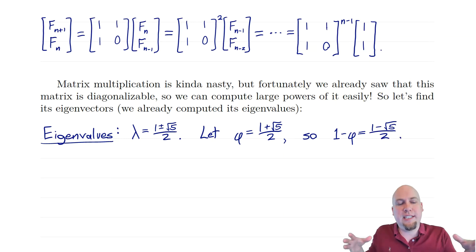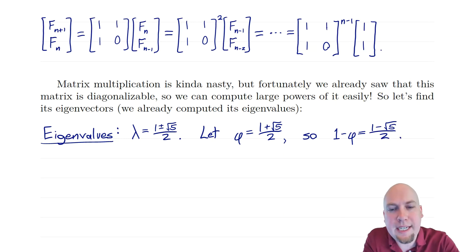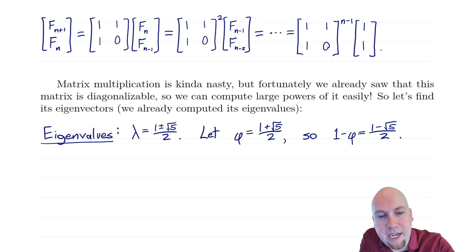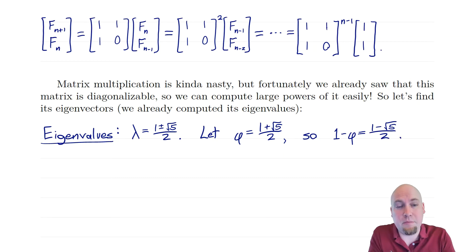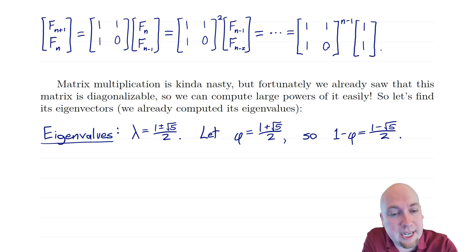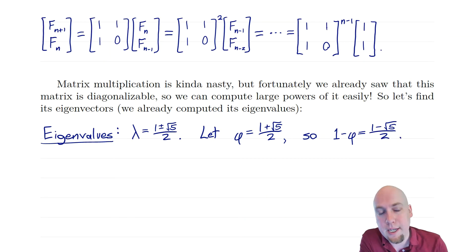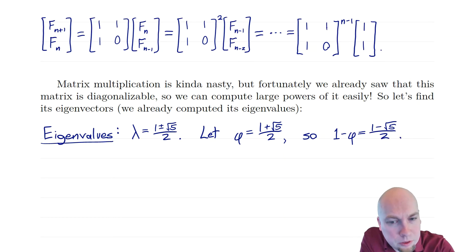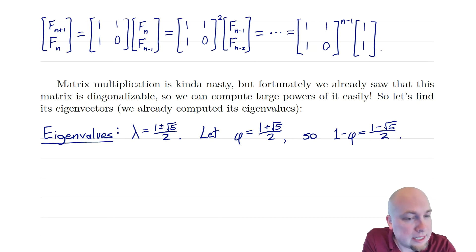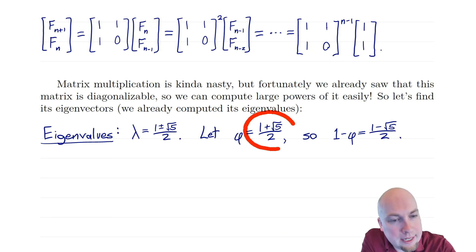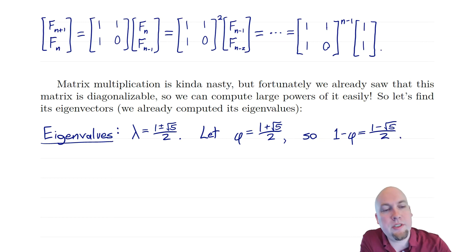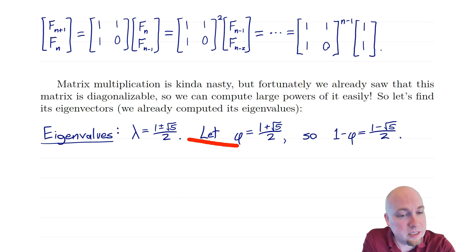Just to consolidate notation and make things a little bit easier to write down, I'm going to give a name to the largest of these two eigenvalues — I'm going to call it phi. If you've ever heard of the golden ratio, that is this number. Phi equals (1 + √5) / 2, which is roughly 1.618. The other eigenvalue, (1 − √5) / 2, turns out to be just 1 minus phi. So the two eigenvalues of this matrix are phi and 1 minus phi.